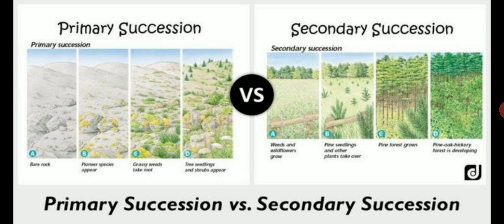Types of Succession: Primary and Secondary Succession. Primary succession is the one that takes place at a site previously unoccupied by living organisms, like a new lava flow or a water body.